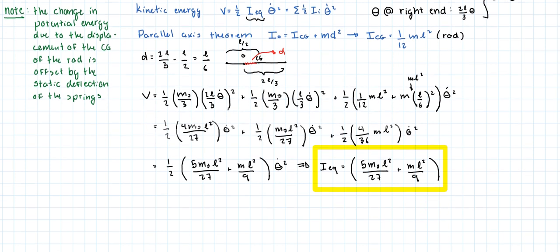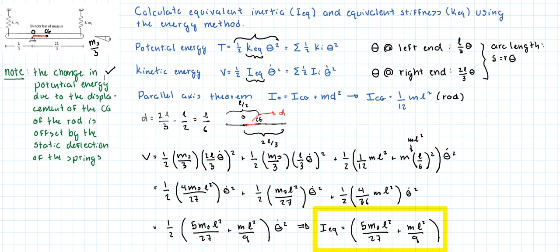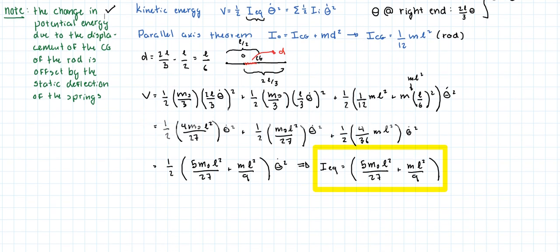Let's do the potential energy. There's a note here. You might be tempted to say that since the center of gravity is moving, there's a change in potential energy. But that is actually offset by the displacement, the static displacement of the spring. So we don't need to take it into account into our calculation, because we could, but they're going to be cancelled by each other, meaning the static deflection and the displacement of the center of gravity.